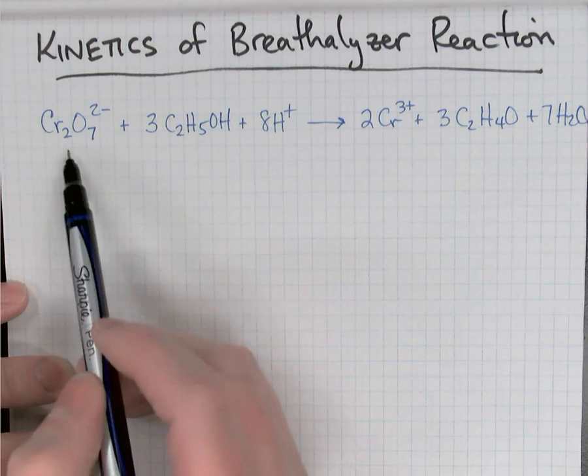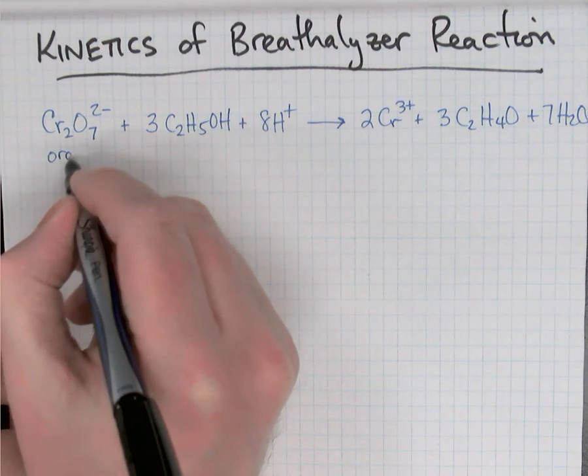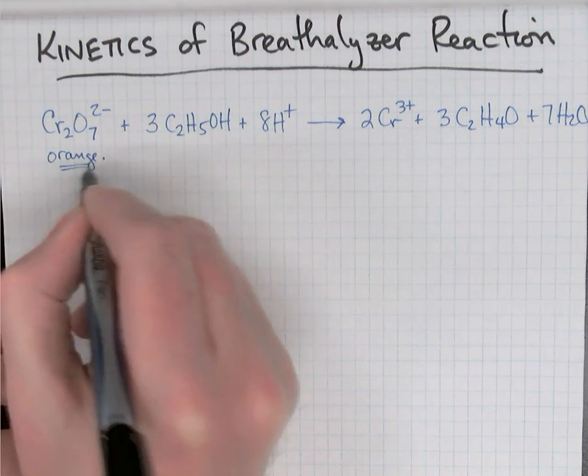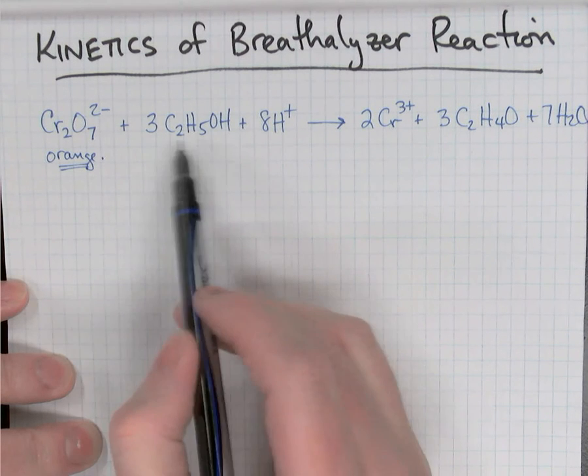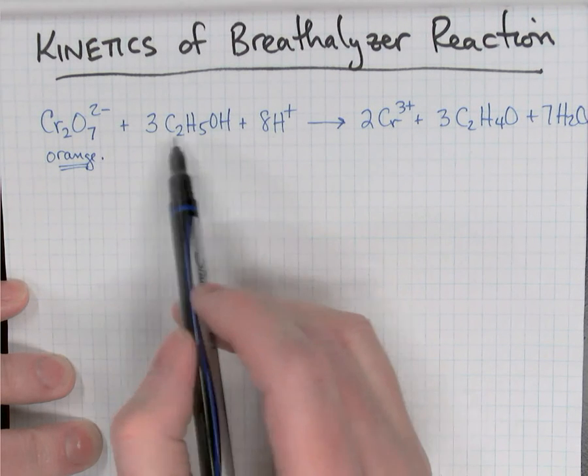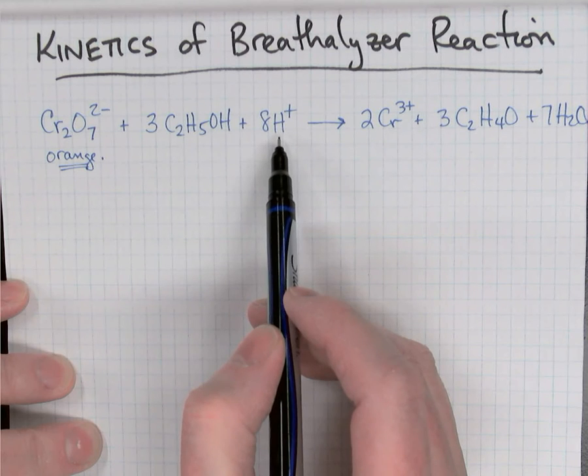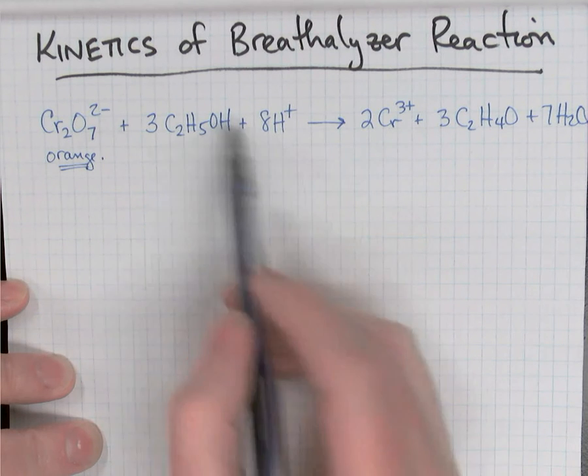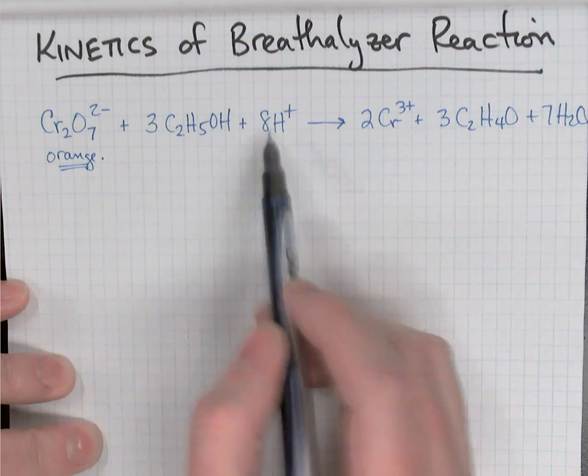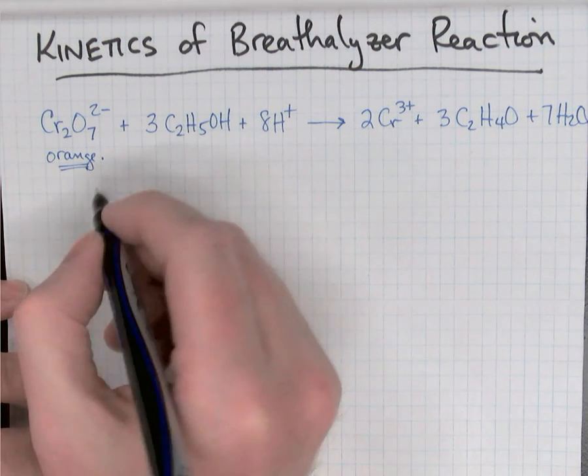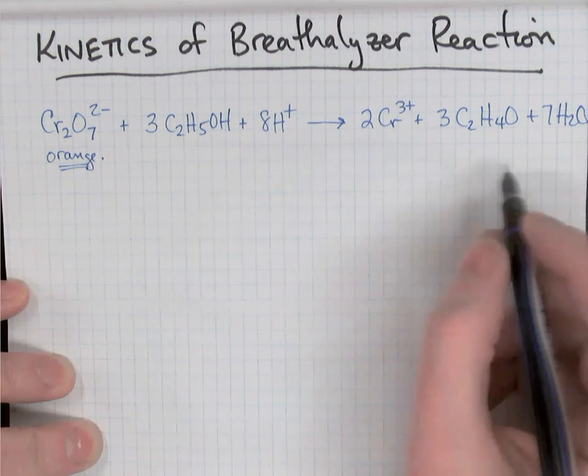Dichromate, orange colored, this was the orange solution that we had at our benches. We added alcohol, ethanol, to that and there was hydrochloric acid dissolved as well. This solution, as soon as the alcohol was added to the dichromate, this reaction began and we were interested in studying the kinetics of this.